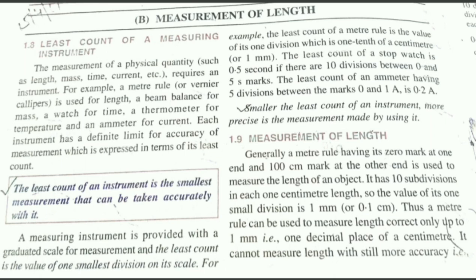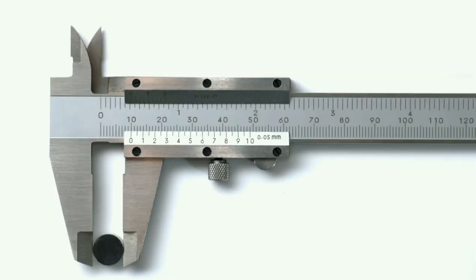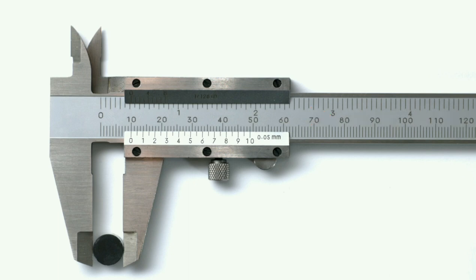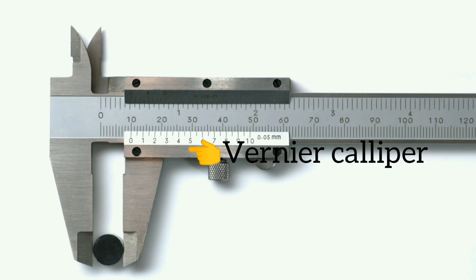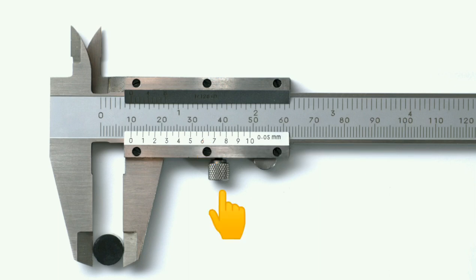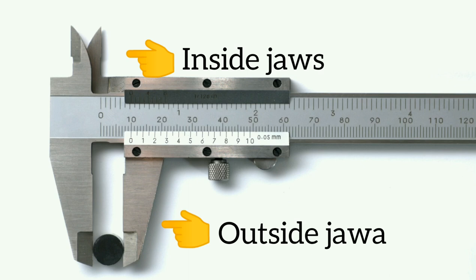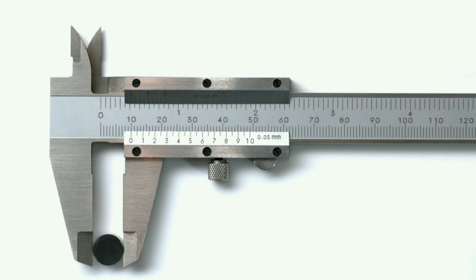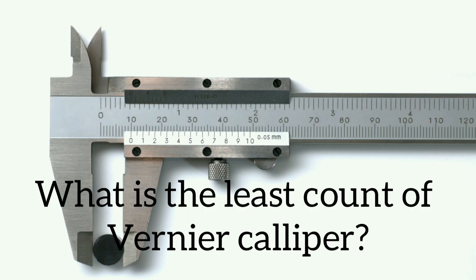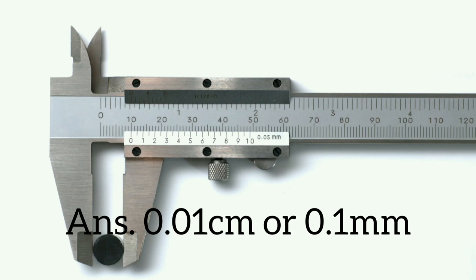So this is the vernier caliper. The vernier caliper has a main scale, which is fixed and not movable, used to measure the length of a rod. The other scale is movable. There are inside jaws and outside jaws, and you can see there is a screw as well. The least count of the vernier caliper is 0.01 cm or 0.1 mm — these values are very important.